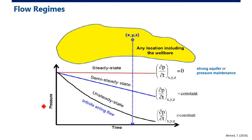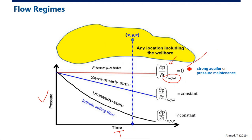If we plot pressure against time, for steady state flow there is no change in pressure as a function of time — the pressure is constant. And it is also constant as a function of location: wherever in the reservoir (any xyz point), there is no change in pressure with time — it equals zero.